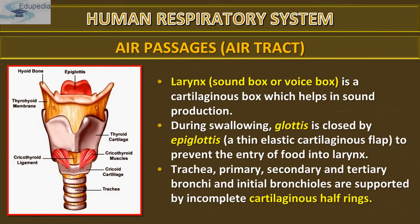The larynx, also known as the voice box or sound box, produces vocal sound. It is a cartilaginous box which helps in sound production. During swallowing, the glottis is closed by the epiglottis to prevent entry of food into the larynx. The trachea, primary, secondary and tertiary bronchi, and the initial bronchioles are all supported by incomplete cartilaginous half rings.